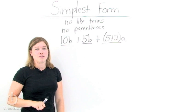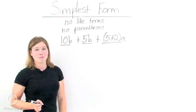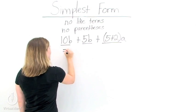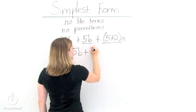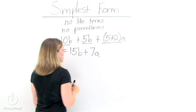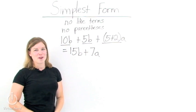We need to get rid of all of that in order to put this in simplest form. So combine your like terms to get 15b and simplify your parentheses to get 7a. Now our expression is in simplest form.